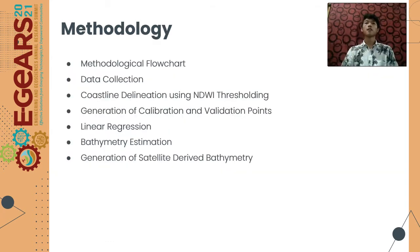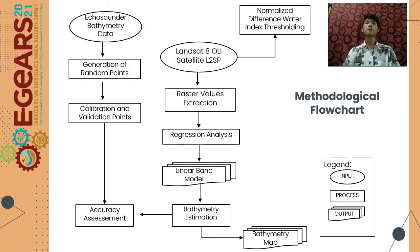The methodology outline includes the methodological flowchart, data collection, coastline delineation using NDWI thresholding, generation of calibration and validation points, linear regression, bathymetry estimation, and generation of satellite-derived bathymetry. The flowchart starts with data collection, creation of bathymetry models, assessment of the accuracy of the models, and generation of the satellite-derived bathymetry.